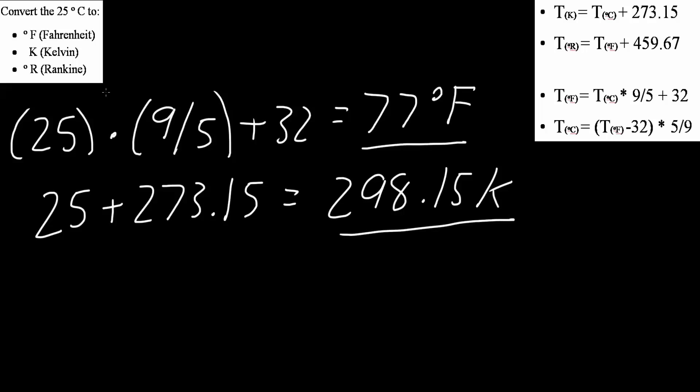Lastly, we want to get Rankine. So we have 25°C and we want to get Rankine. And based off of these equations, there's no direct way to go from Celsius to Rankine. However, we got Fahrenheit already, so we can use this equation.